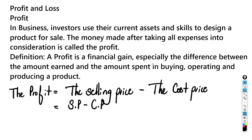Today we're going to be looking at profit and loss. In business, investors use their current assets and skills to design a product for sale. The money made after taking all expenses into consideration is called the profit. A profit is a financial gain — specifically the difference between the amount earned and the amount spent in buying, operating, and producing a product.